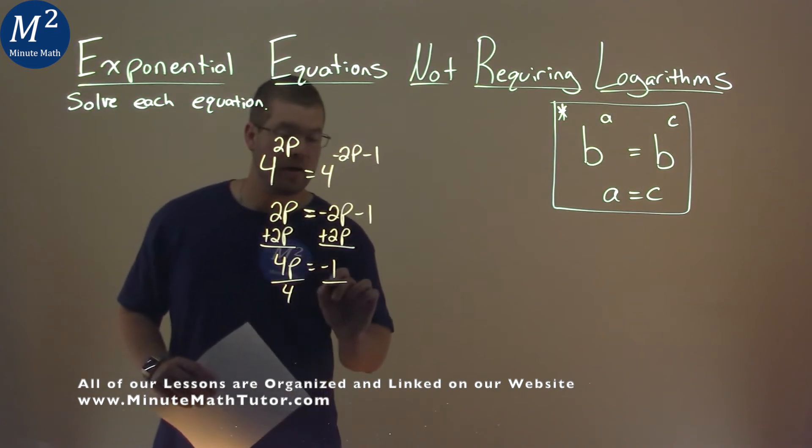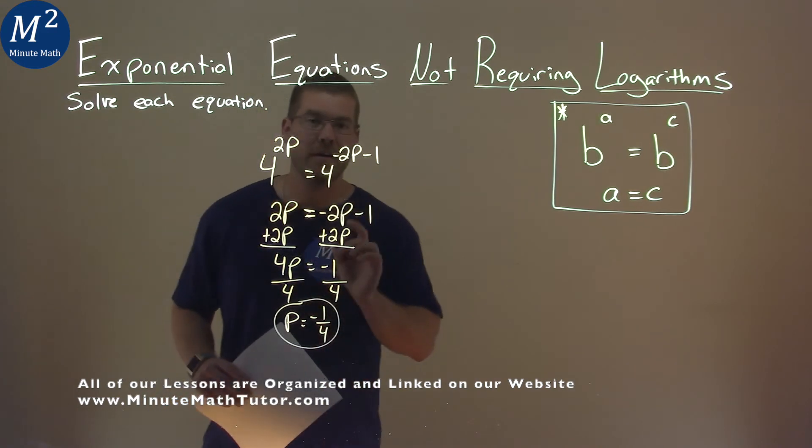Divide both sides by 4, and p equals negative 1 fourth, and that is our final answer.